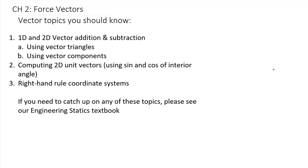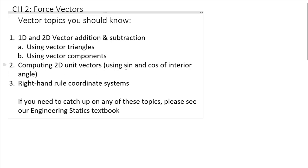I'm making a general assumption that you're fairly comfortable with one-dimensional and two-dimensional vector addition and subtraction — that's addition both using vector triangles, which are a graphical approach, as well as vector components, or a vector algebra approach. You can compute 2D unit vectors — you may not have realized that you're doing this with sine and cosine, but I'll show you that quickly — and also you can find right-hand rule coordinate systems.